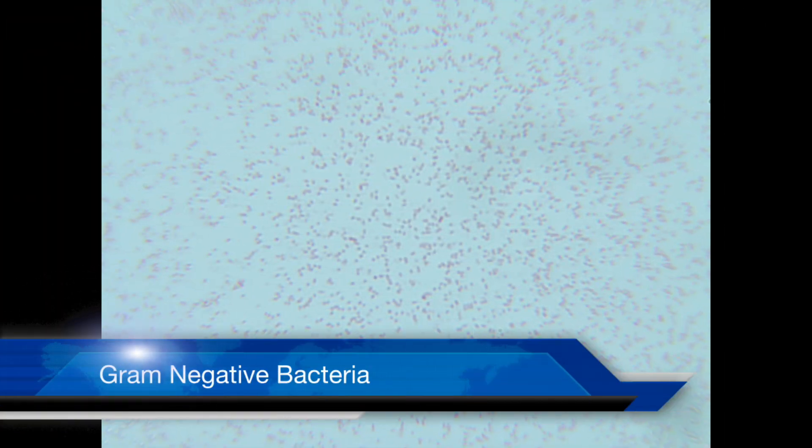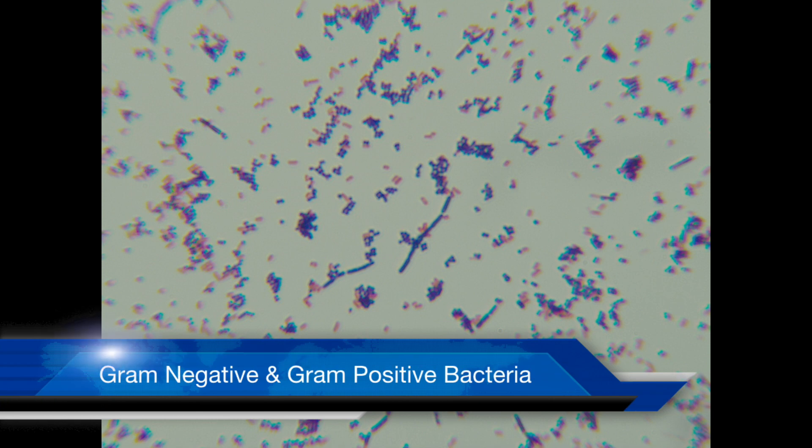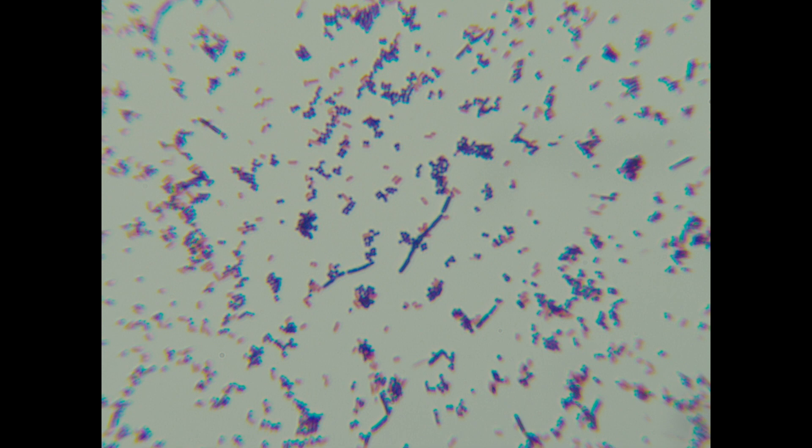Here is an example of Gram-negative bacteria stained. Notice the pink color. This is an example of a mixed culture showing both Gram-negative and Gram-positive bacteria. Note the differences in cell shape, size, and color.